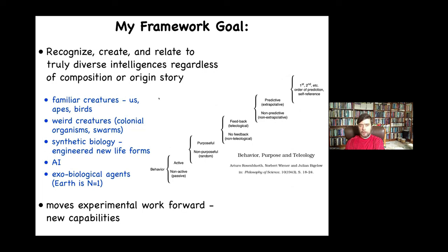I want to think about all possible beings — familiar creatures like us, birds, apes, octopus — but also very strange creatures like colonial organisms and swarms, engineered synthetic biology, artificial intelligence whether in software or hardware, and possible exobiological agents. We should be able to think about all of these things using the same tools. And that forces us to ask: what do they all have in common? If it isn't origin story, and it isn't the material from which they are made, then the question is, what do they all have in common?